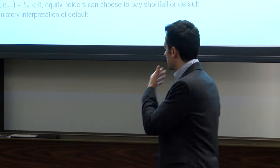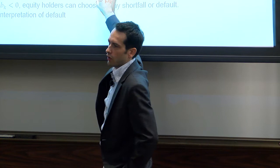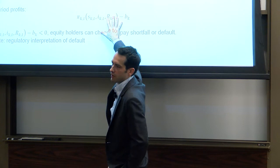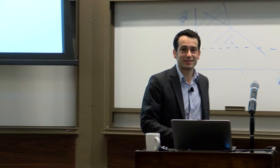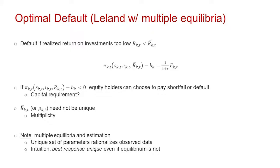There's also a regulatory interpretation of default: the regulator comes in at the end of every period and says, you have a shortfall — either put in money or we'll shut you down. That's effectively the same as the equity model but closer to how the world actually looks. On the supply side, we think about optimal default. We know that if there's a high enough return, you don't shut down the bank. If the return is low enough, equity holders walk away. There's a cutoff R-bar where you're indifferent between shutting the bank or keeping it alive — that's essentially the franchise value of the bank.